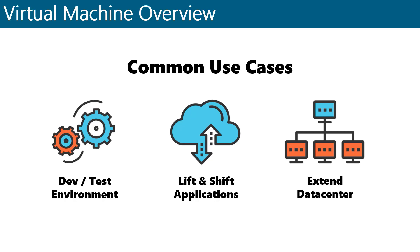You only pay for the compute power you use. Organizations will often need or want to expand their physical data centers into the cloud. By leveraging a VPN connection between the on-prem environment and Azure, you can spin up VMs on an Azure virtual network and easily connect them to your organization's network.